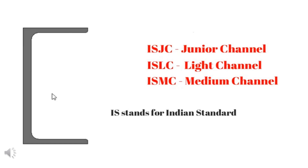The designations for channel sections are ISJC, ISLC, and ISMC. IS stands for Indian Standard. JC is Junior Channel, LC is Light Channel, and MC is Medium Channel. We use steel tables here. The flange and web thicknesses are available in the steel table for each designation.